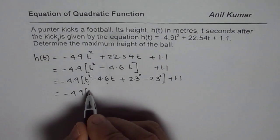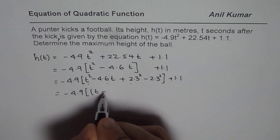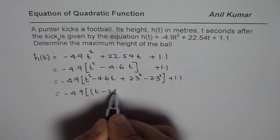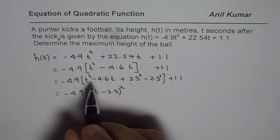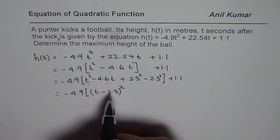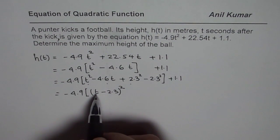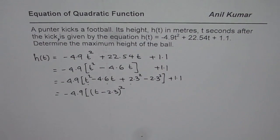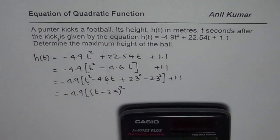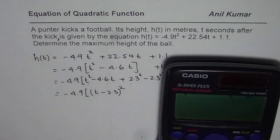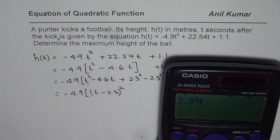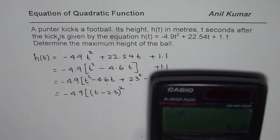From here, we can write this as (t - 2.3)², so these three terms are perfect square. That can be written as t minus 2.3. And now, let us find what is 2.3² equals to. 2.3² is equal to, in decimals, 5.29.